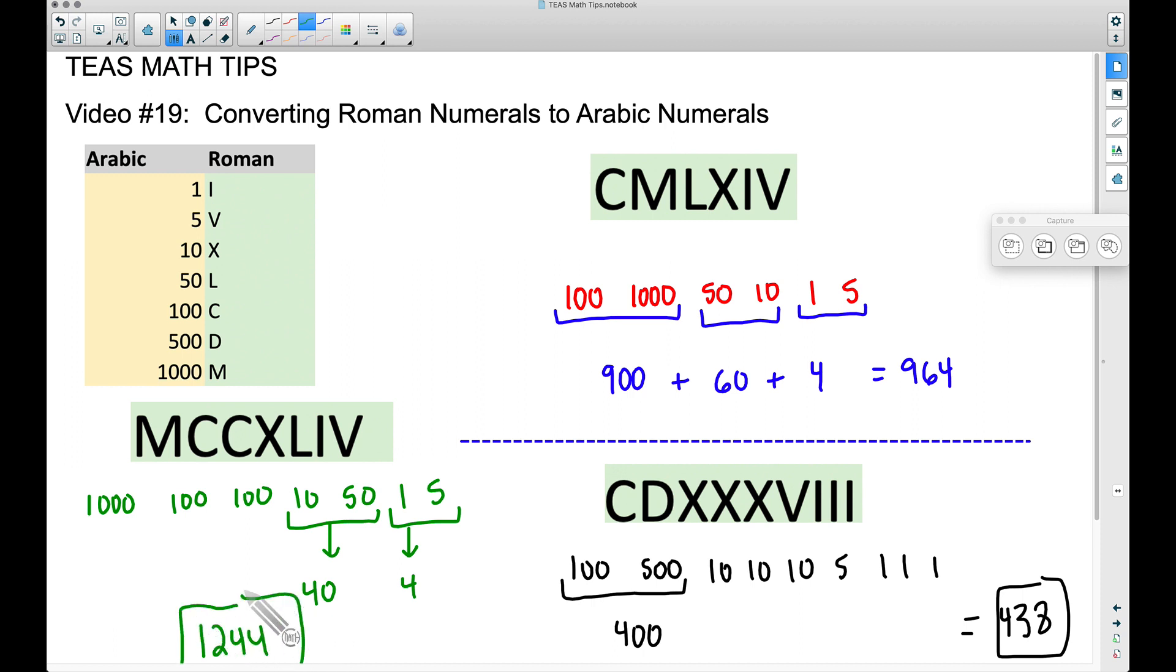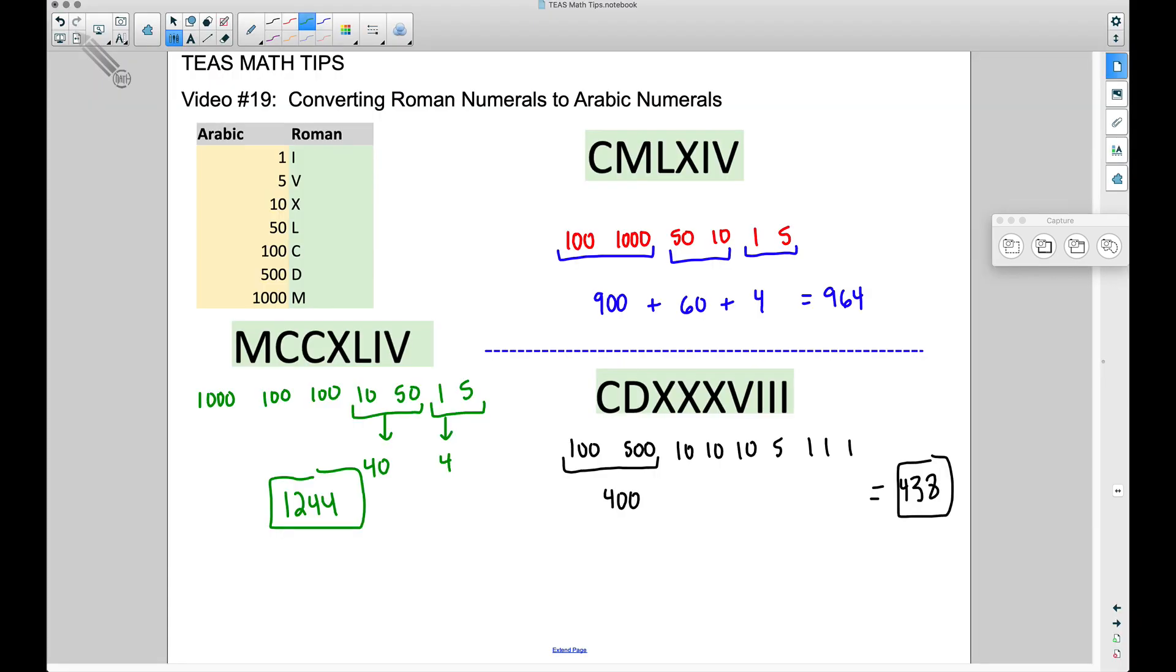And there you have it - three examples of converting a Roman numeral to an Arabic numeral. Probably in the next video of Teas Math Tips, we'll go the other way. We will take an Arabic numeral and convert it to a Roman numeral. And that's it for this video, I hope it helped.